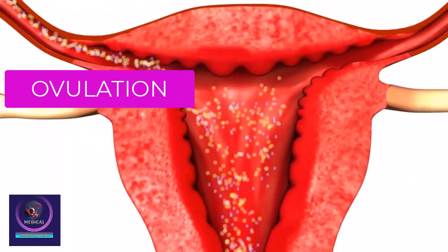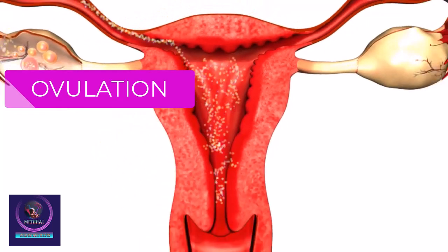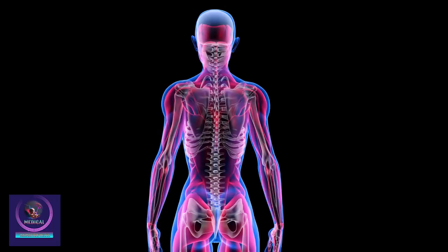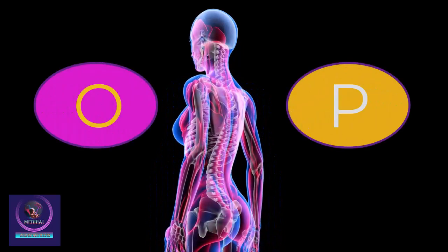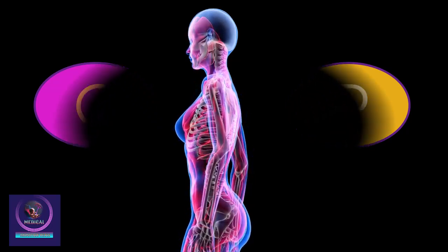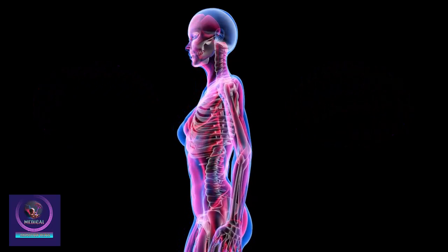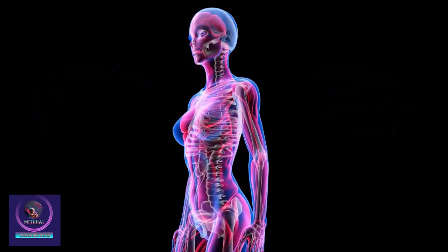This happens once every month as part of your menstrual cycle. The ovaries' other job is to make two female hormones called estrogen and progesterone. These hormones control the development of female body characteristics like breasts, body hair, and even your body shape.